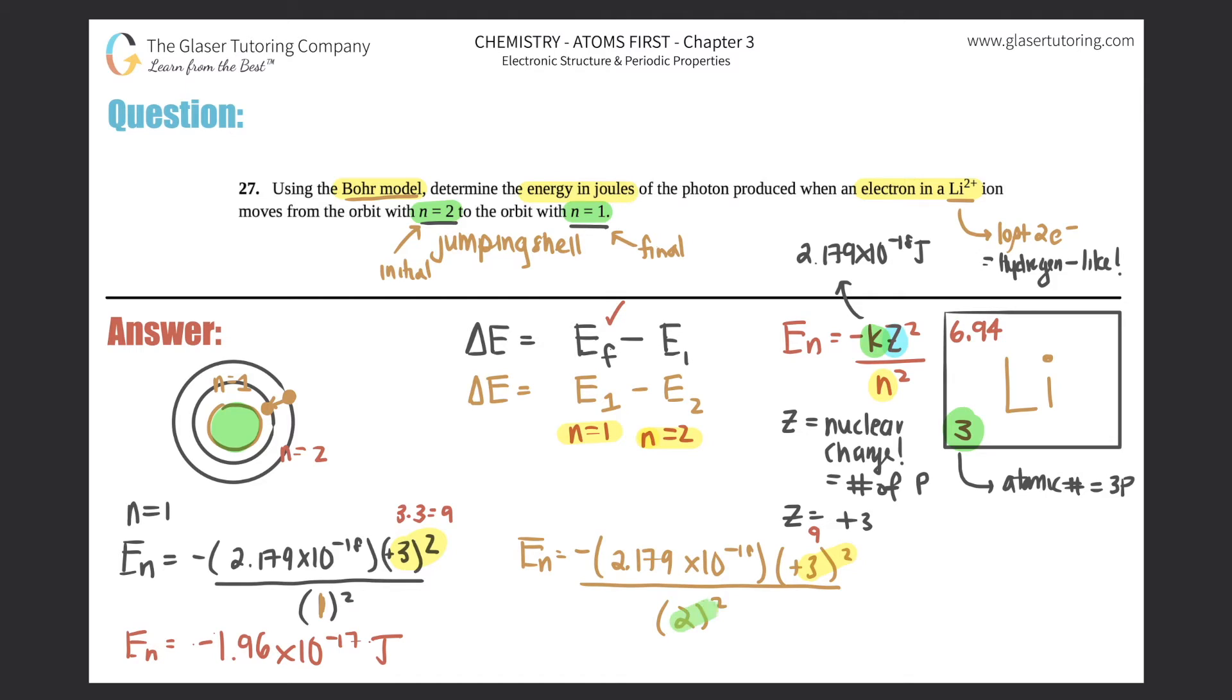Now we have to figure out the second part. So e n equals negative 2.179 times 10 to the negative 18th times 3 squared all over 2 squared. 3 squared is 9 and 2 squared is 4. So I'll just times by 9 and divide by 4 when I do this calculation.